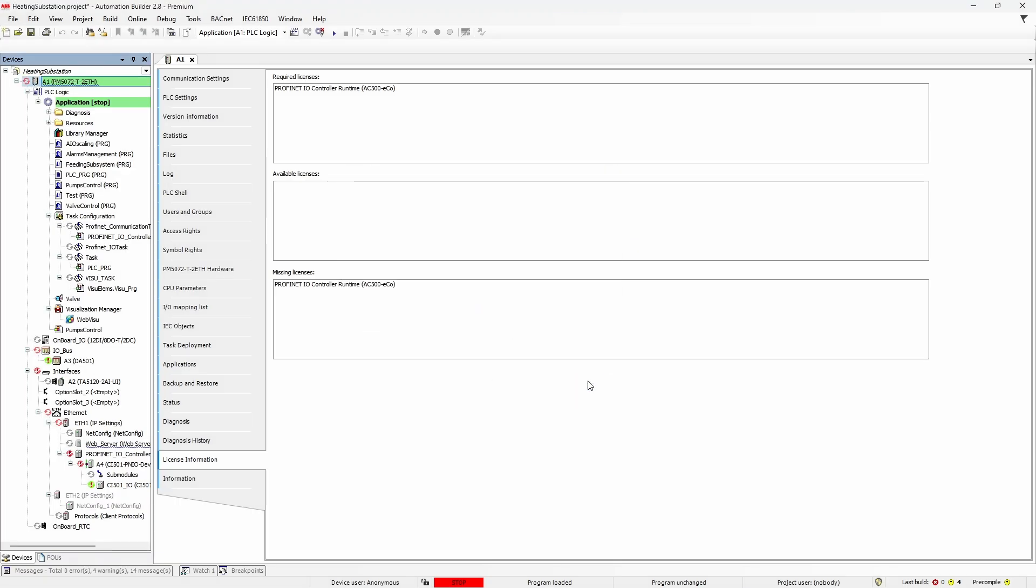A moment later, Runtime Demo License valid for 10 days will appear in Available Licenses section. But Automation Builder will still remind us time to time that proper license is missing. Okay, now you may switch the PLC to run.